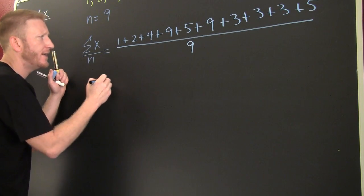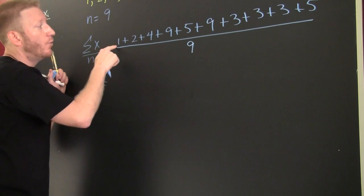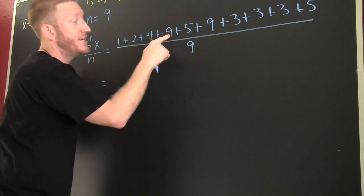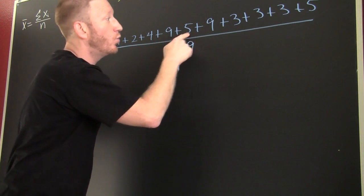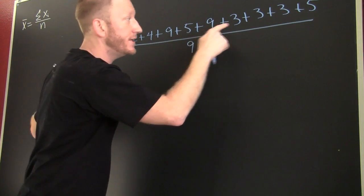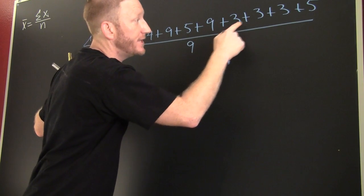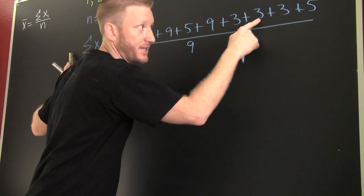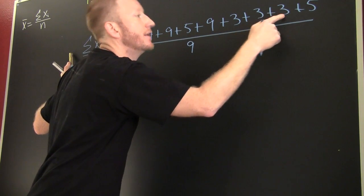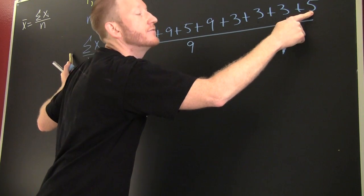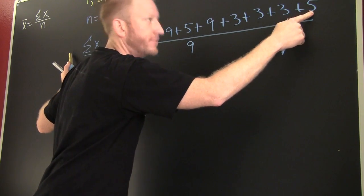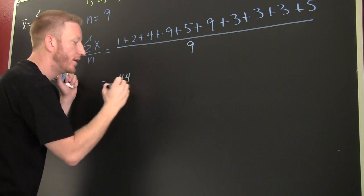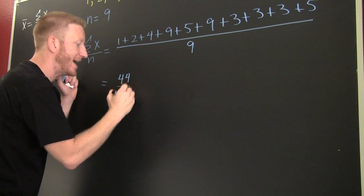Let's go ahead, let's finish him. One and two is three, and four is seven, and nine is 16, that's 21, 33, 34, 35, 36, 39, and 44.